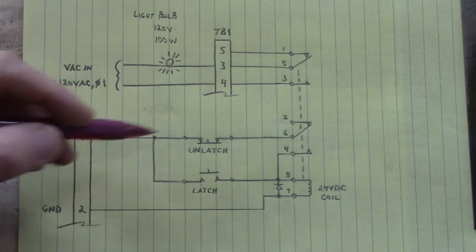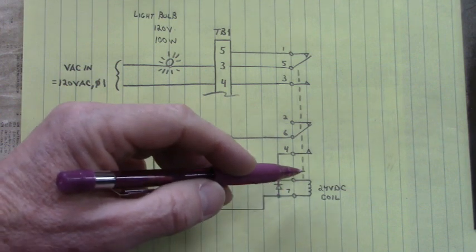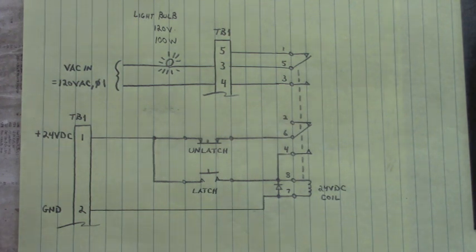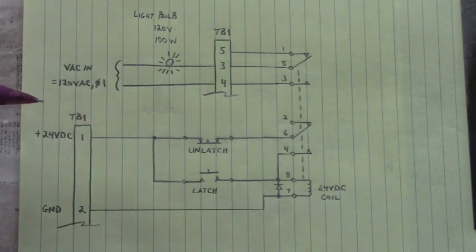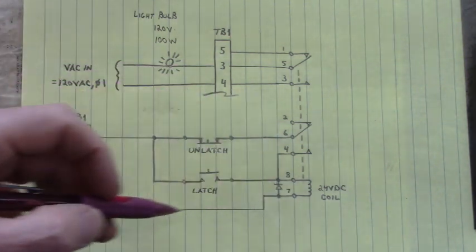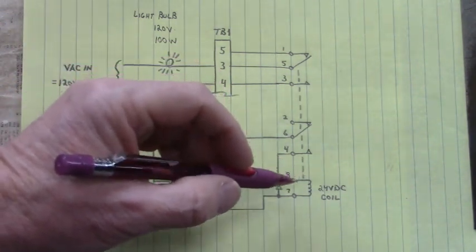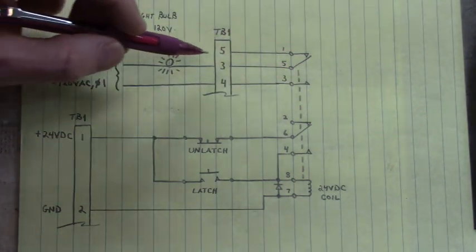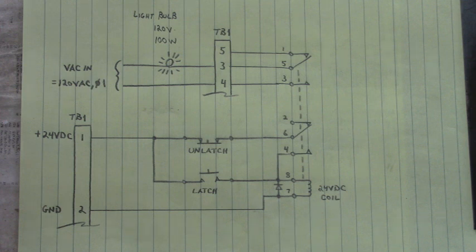Current no longer flows through this contact into that relay coil and it de-energizes and opens those contacts. Now the light bulb, when you push the latch button, current flows through here, energizes the contacts. This one maintains current flow through the coil, and this contact closes, completing the circuit through the light bulb and illuminating that light bulb. Now let's watch the circuit in action.